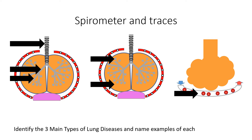To get started, what you have to do is identify the three main types of lung diseases and give an example of each one. Pause the presentation, spend two minutes coming up with your answer, and when you're ready you can restart the presentation.